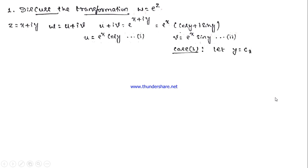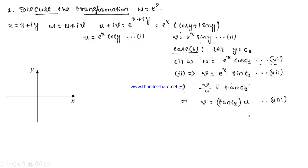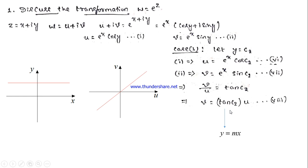Next consider y = c2, which is a straight line parallel to the x-axis. Substituting gives u = e^x cos c2 and v = e^x sin c2. Dividing one equation by the other to eliminate e^x, we get v = tan(c2) · u. This is of the form y = mx, which is a straight line passing through the origin. So the family of straight lines parallel to the x-axis is transformed to a family of straight lines passing through the origin in the w-plane.